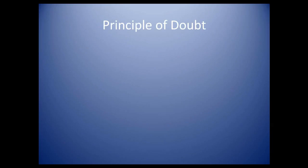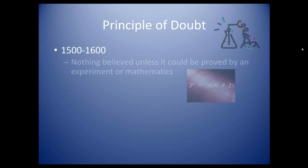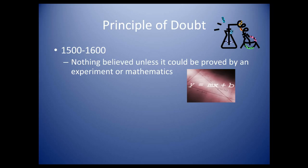During the scientific revolution, scientists focused on a principle called the principle of doubt or questioning. From 1500 to 1600, nothing was to be believed unless it could be proved by an experiment or mathematics. So scientists would not accept a conclusion unless that was the case.